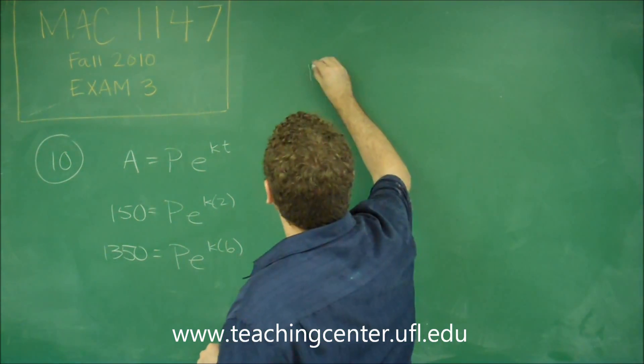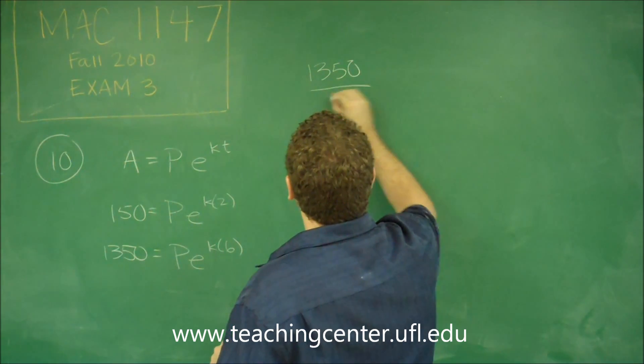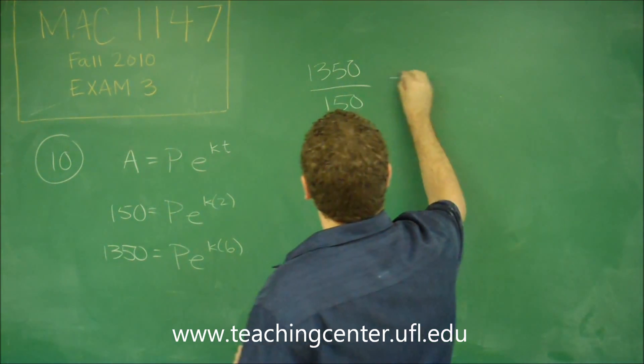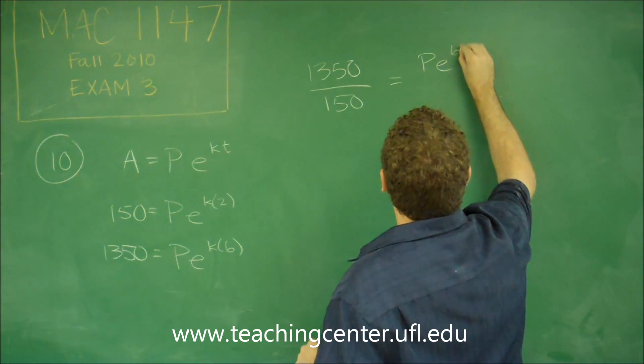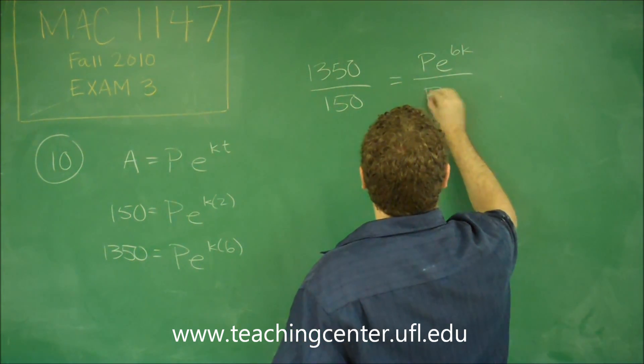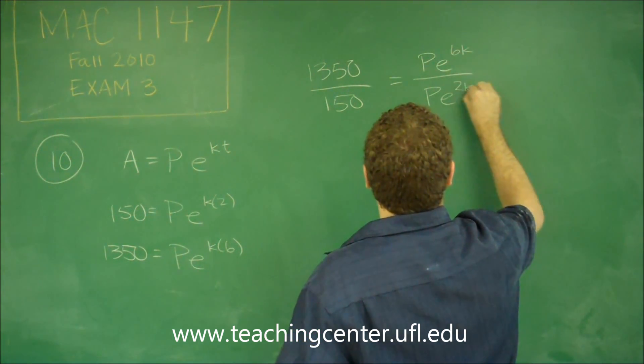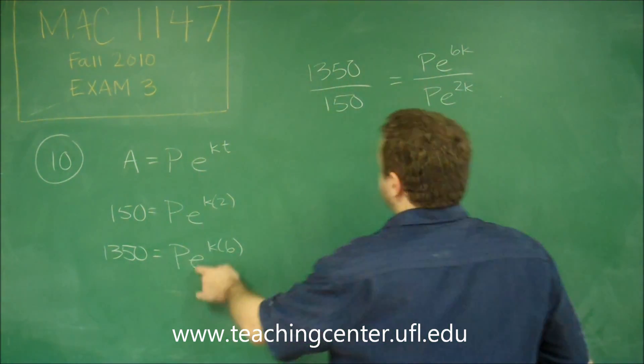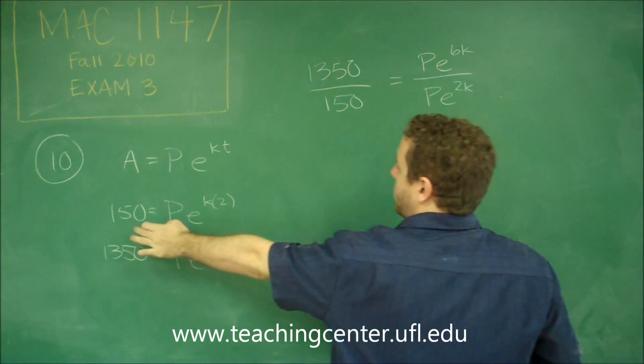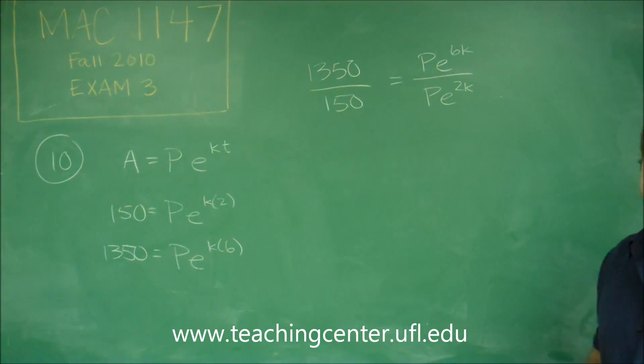We can do 1350 over 150 equals PE to the 6K over PE to the 2K. So what we did was just take 1350 in those, put them on the top, 150 in that one, put them on the bottom. That has to be the same thing.